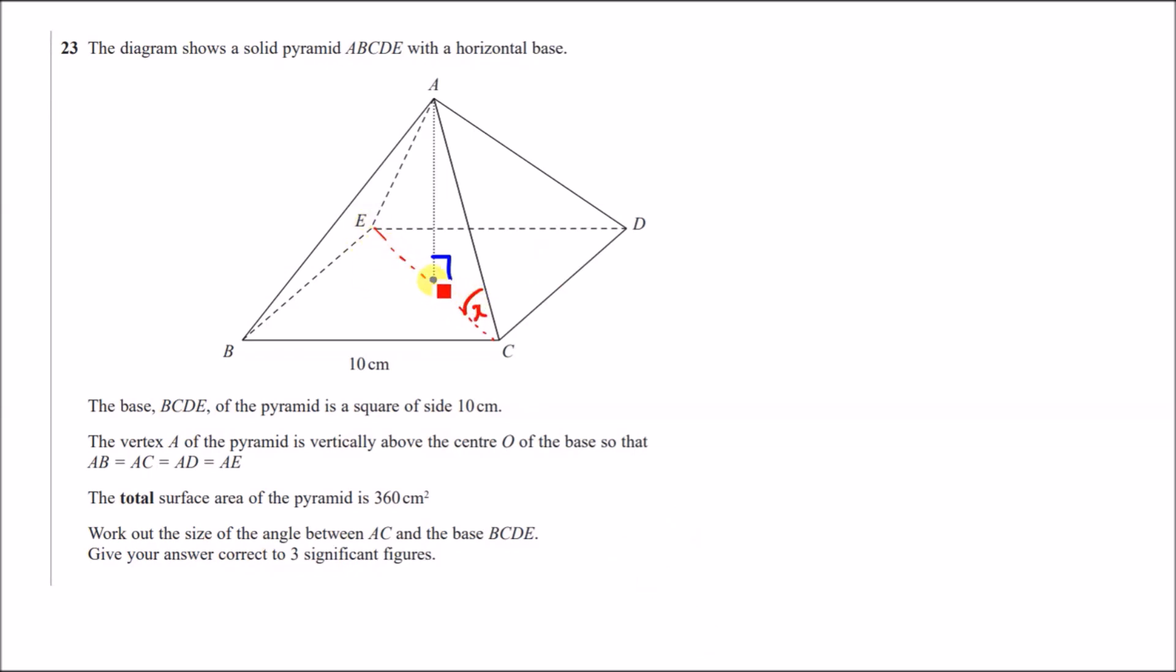Now the total surface area of the pyramid is 360 cm2. So that's the area of all the faces. Work out the size of the angle between AC and the base BCDE. So AC and the base. So we're trying to find, basically, if we just draw a diagonal line cut into the base, we want to find this angle here. So let's call this x. Now, to get that, we need a few things. We need to firstly know this little diagonal length here, which is perpendicular to this length here. So this is actually a right angle triangle.